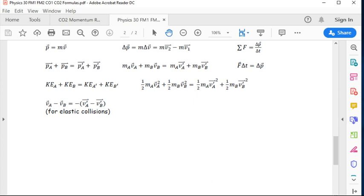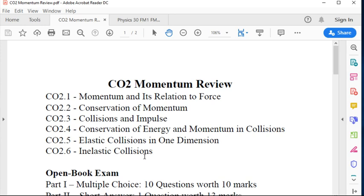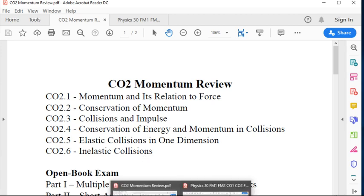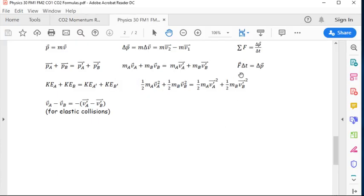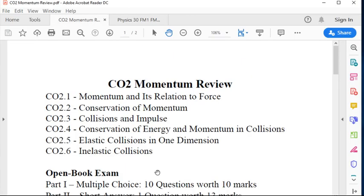That was in CO2.2 and then we looked at CO2.3, which was collisions and impulse. That's where we went back to here and looked at impulse, the quantity. When we take this equation and rearrange it for change in momentum, F multiplied by delta T is a term referred to as impulse. When we exert a force on an object for a certain time period, we give it a change in momentum.